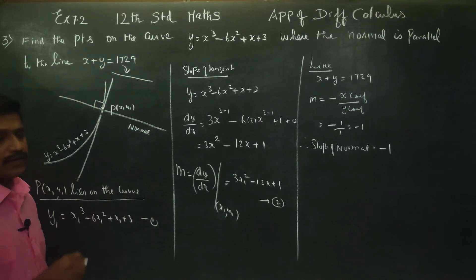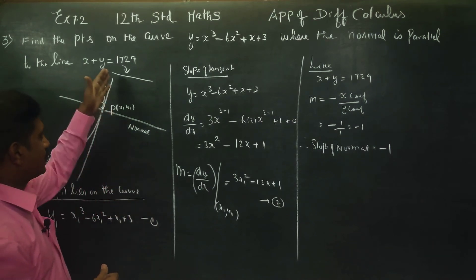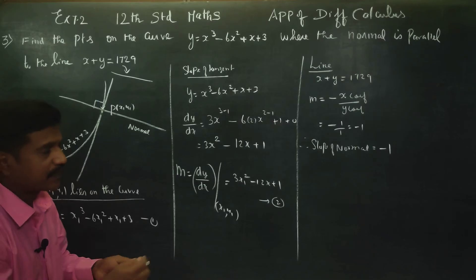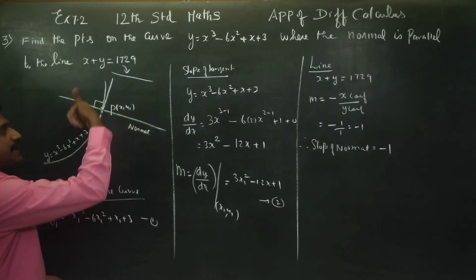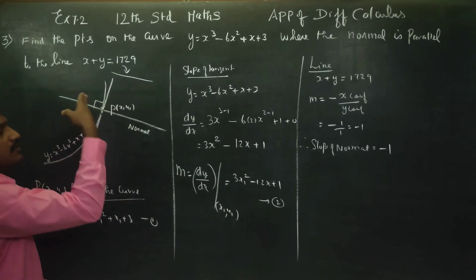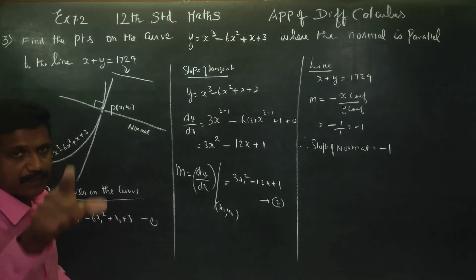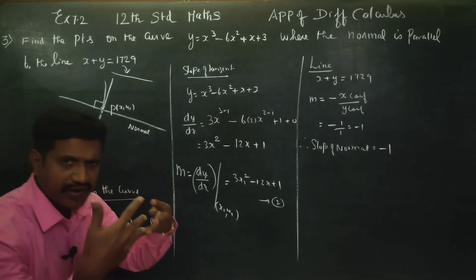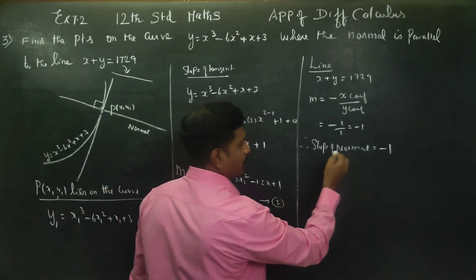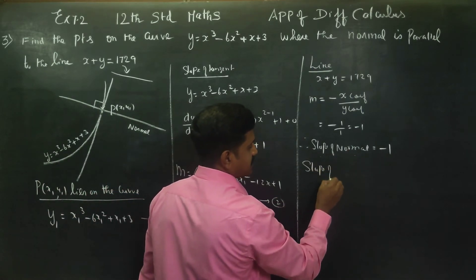Since the normal and tangent are perpendicular, we use the perpendicular lines slope relationship from 10th standard. The slope of the normal times the slope of the tangent equals minus 1. Therefore, the slope of the tangent is equal to 1.